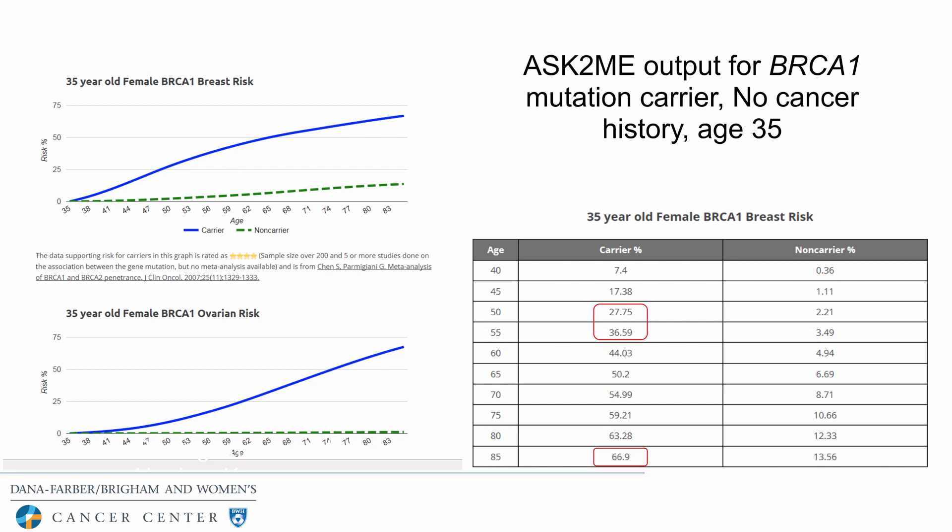We also discuss how risk changes with age using a tool called Ask2Me, which models a patient's risk based on the latest research data and their current age. This can aid in decision-making, particularly when a woman is considering prophylactic surgery. For example, for a 35-year-old woman with a BRCA1 mutation, the risk at age 40 is only 7.4%, but that risk increases significantly in the 50s and 60s, shown in charts for both breast cancer and ovarian cancer risk with age.